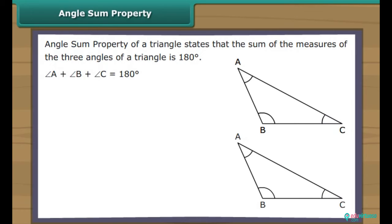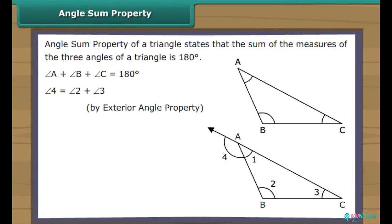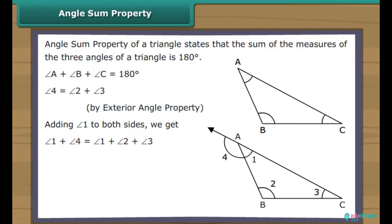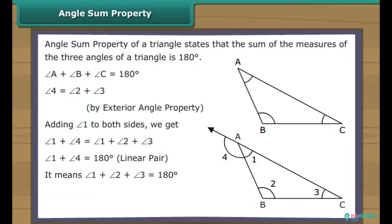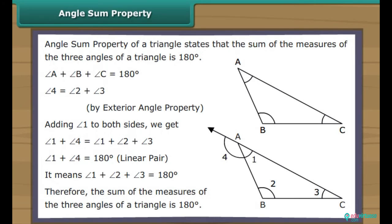To prove the angle sum property of a triangle: extend angle BAC. Angle 4 equals angle 2 plus angle 3 by the exterior angle property. Adding angle 1 to both sides, angle 1 plus angle 4 equals angle 1 plus angle 2 plus angle 3. Since angle 1 plus angle 4 equals 180 degrees (linear pair), angle 1 plus angle 2 plus angle 3 equals 180 degrees. Therefore, the sum of the three angles of a triangle is 180 degrees.